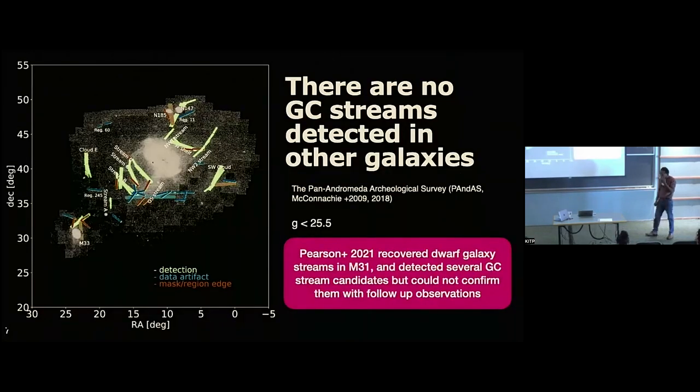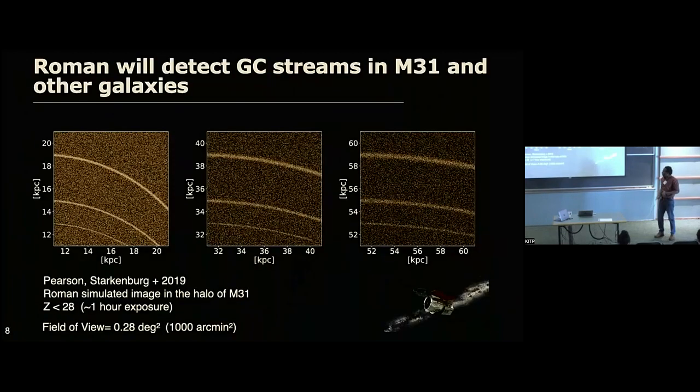So people are trying to look for streams in other galaxies, starting with Andromeda. This is an example of a work that Sarah Pearson led. And they were looking for globular cluster streams in M31 and M33. They were able to manifest some candidates, but they couldn't confirm them because just the magnitude limit, the sensitivity of Pandas wasn't enough to actually see these features, or maybe they're not there.